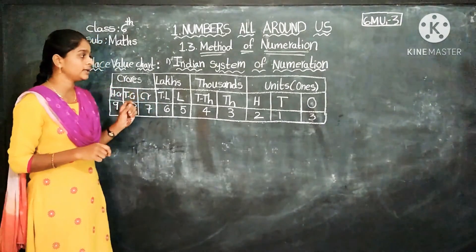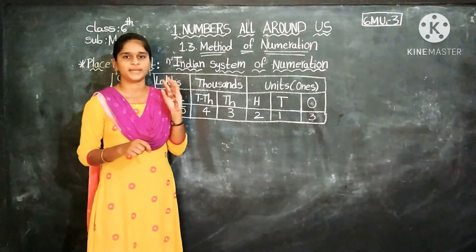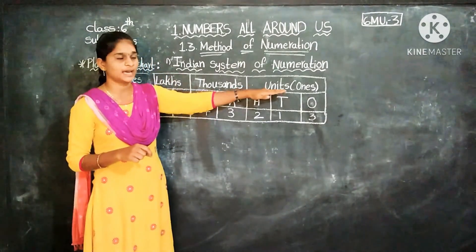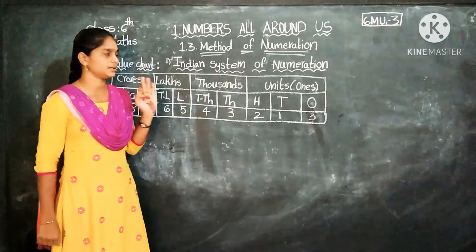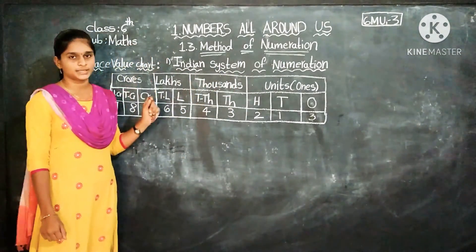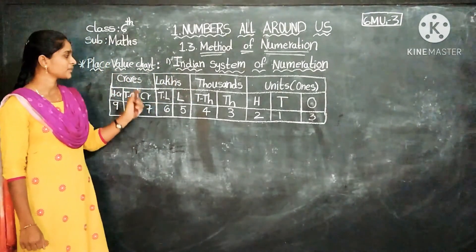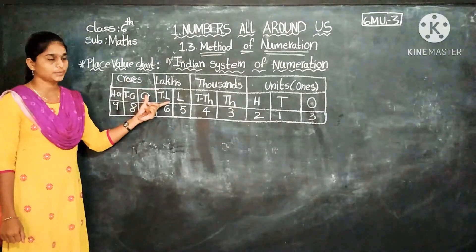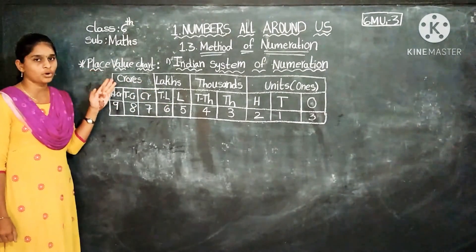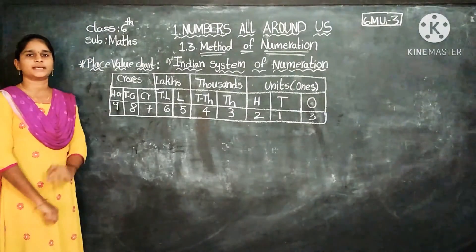Every period has some places. The Units period has 3 places. The Thousands period has 2 places. The Lakhs period has 2 places. And Crores has 3 places.